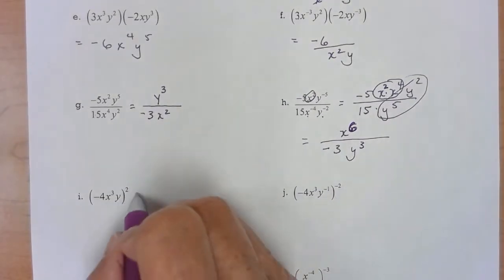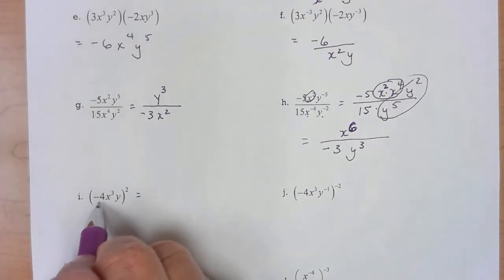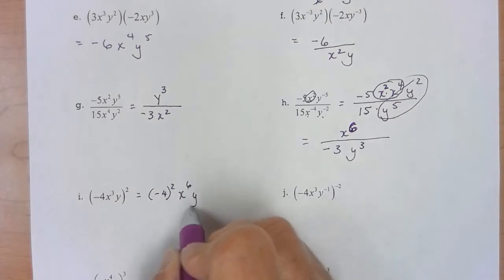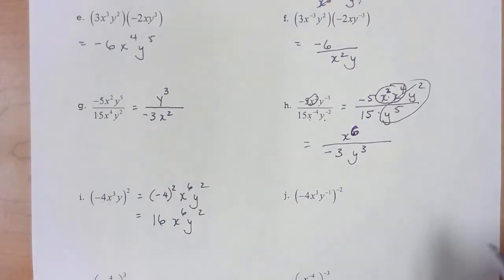I see parentheses followed by power. Beware of negative coefficients, they need to be in their own parentheses.